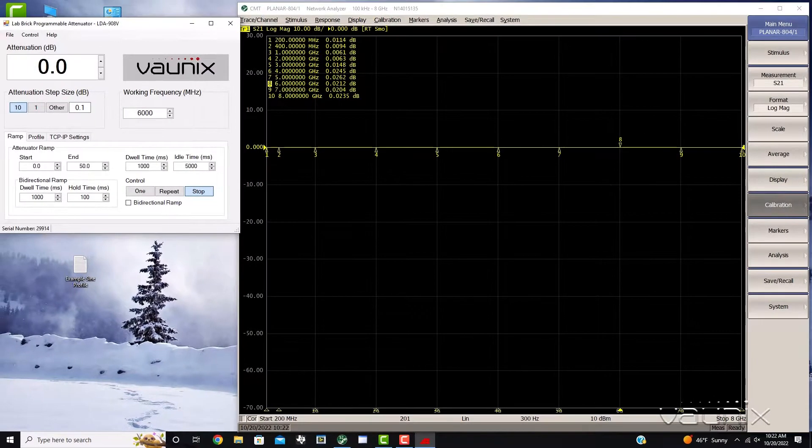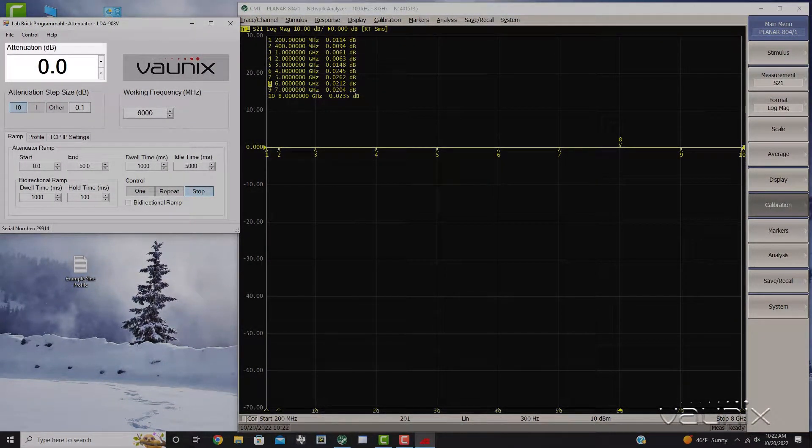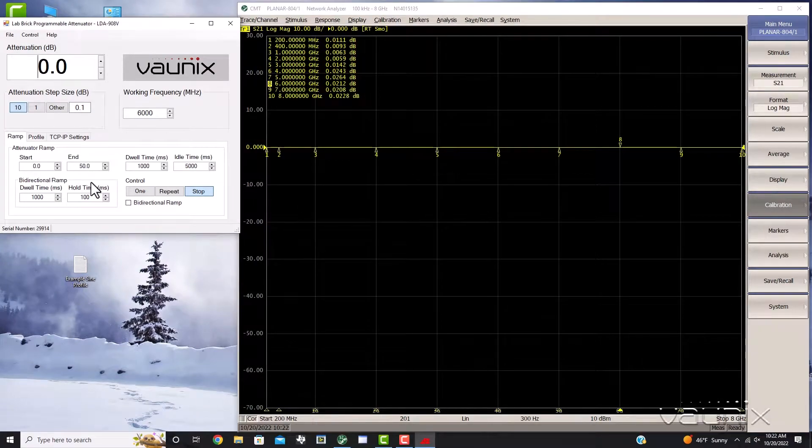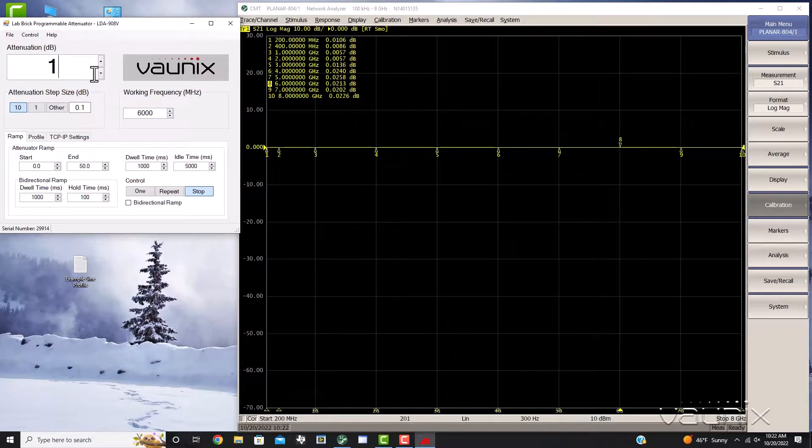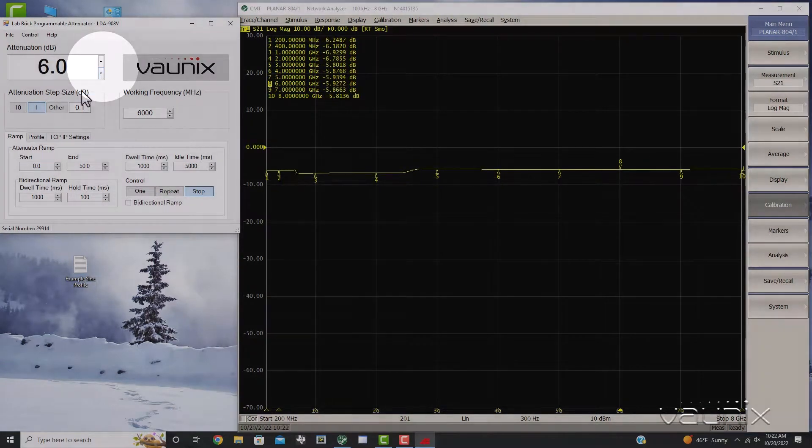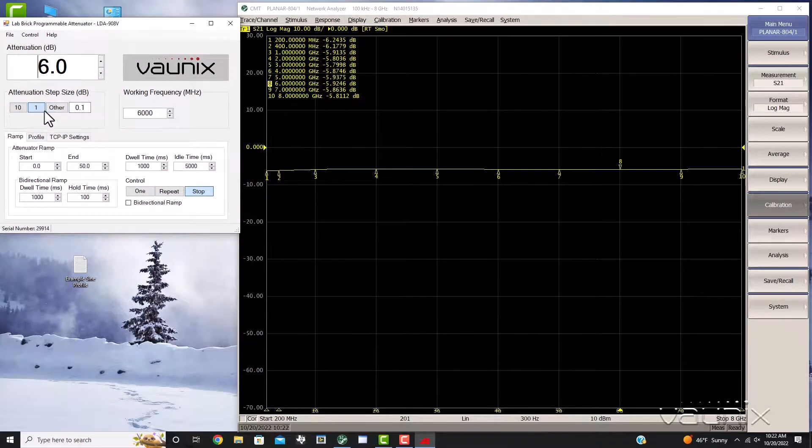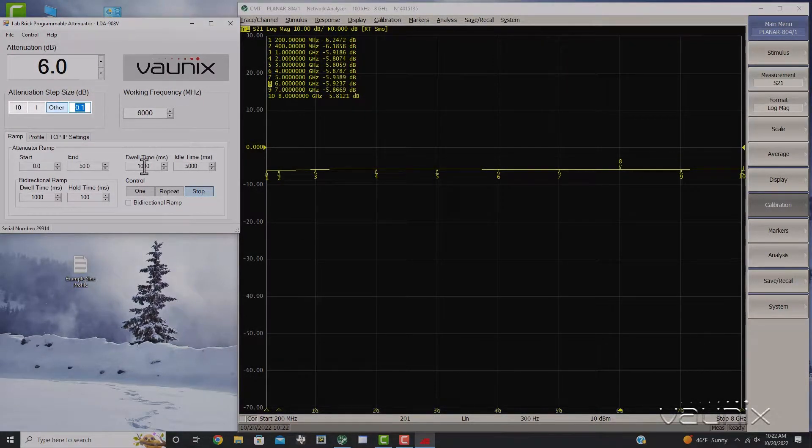To set the RF output power using the attenuator field on the top of the screen, type the desired attenuation level into the window and hit the enter key, or use the up and down arrows. The usual presets are here as well, one in 10 dB, or you can select other by clicking on the other window and entering the values.